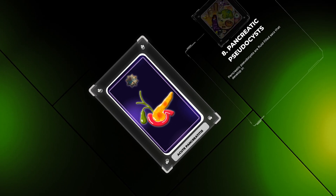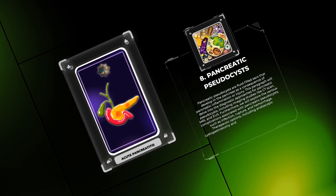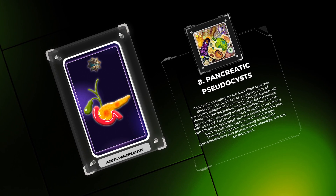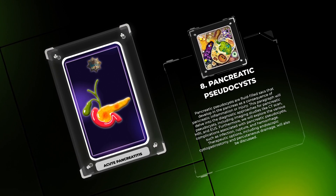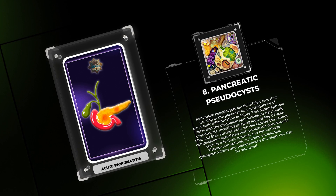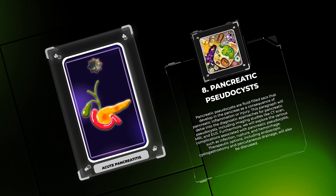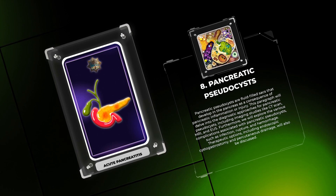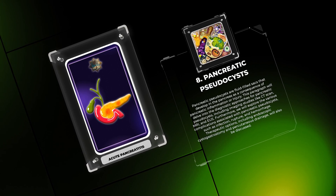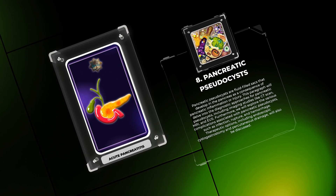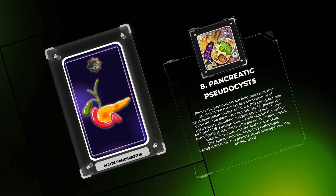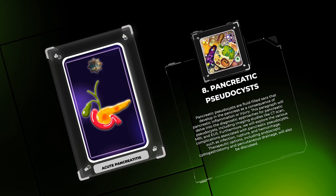Pancreatic pseudocysts are fluid-filled sacs that develop in the pancreas as a consequence of pancreatic inflammation or injury. Diagnostic approaches include imaging studies like CT scan, MRI, and EUS. Complications associated with pancreatic pseudocysts include infection, rupture, and hemorrhage. Therapeutic options, including endoscopic cystogastrostomy and percutaneous drainage, will also be discussed.